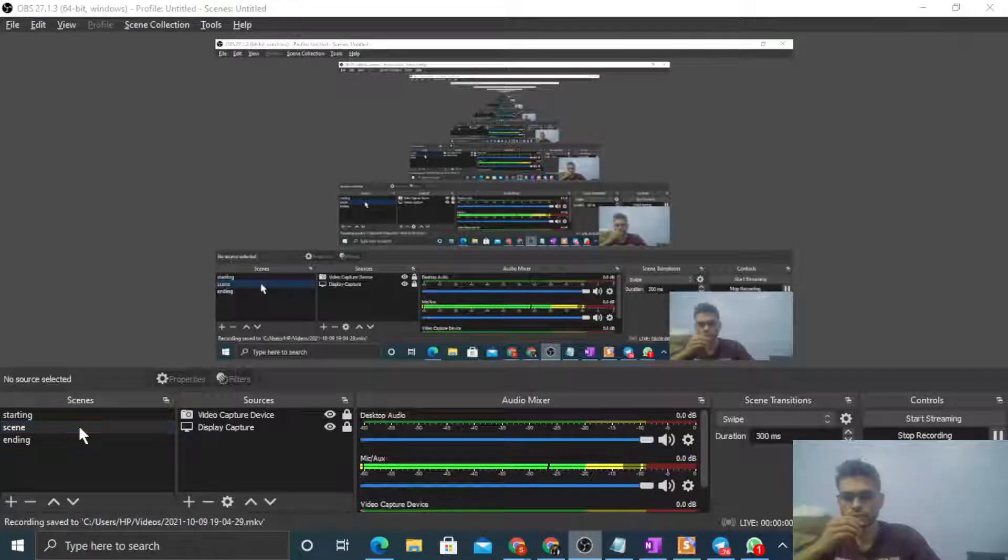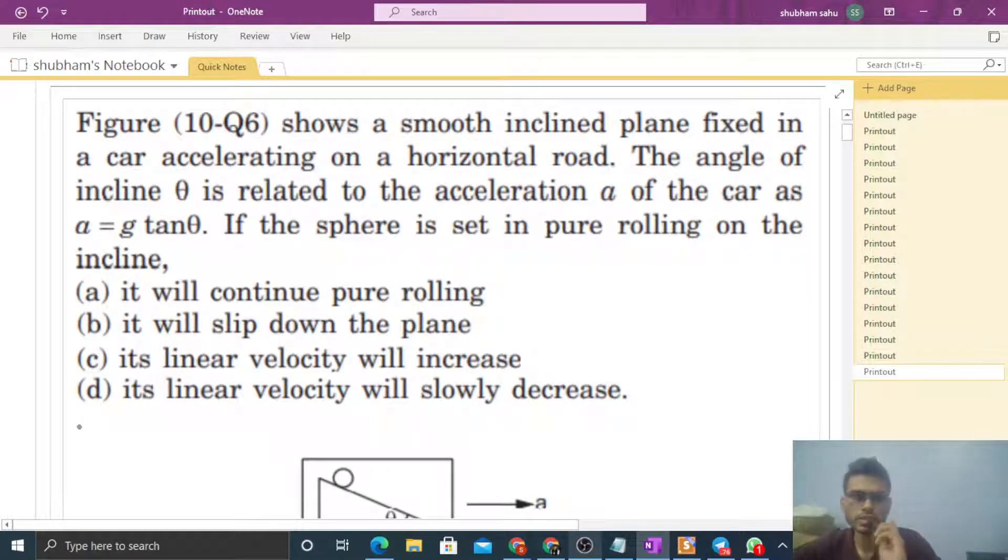Okay, hi everyone. Today let's discuss this interesting problem. It says the figure shows a smooth inclined plane fixed in a car accelerating on a horizontal road. The angle of incline theta is related to the acceleration a of the car as a equals g tan theta. If the sphere is set in pure rolling on the incline, find...